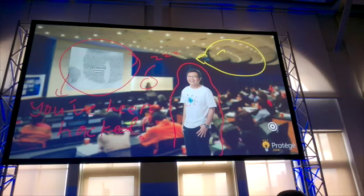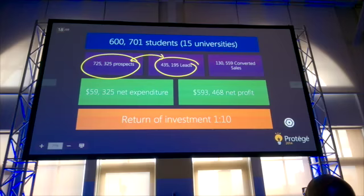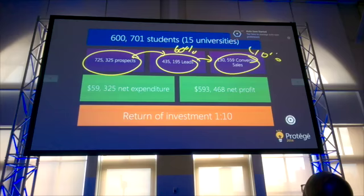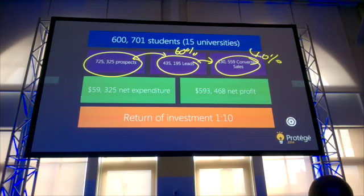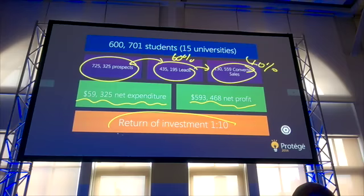Our campaign over three months will have an average reach of about 700,000 university students. With a 60% engagement rate and a further 40% conversion rate, this translates into 130,000 students who are active subscribers of Drawboard PDF at the end of our three-month campaign. Our net expenditure is around $59,000, but our net profit reaches up to $593,000 Australian dollars — that is an ROI of a 1 to 10 ratio.